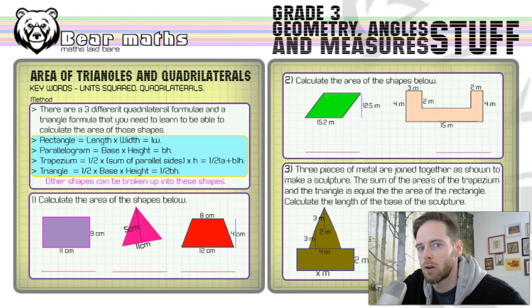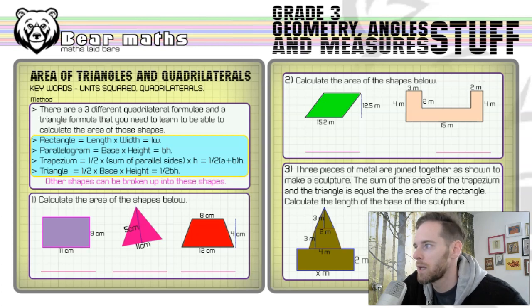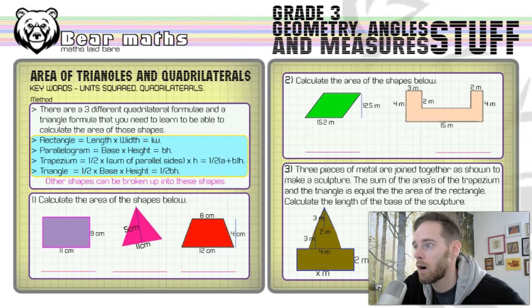To calculate the area of the shapes, put them in the blue box in the method section. Rectangle is l times w — length times width. Parallelogram is b times h — base times height. Trapezium is half the sum of the parallel sides multiplied by the height, written as half of (a + b) multiplied by h, where a and b are the parallel sides.